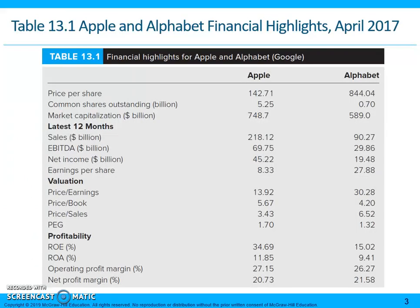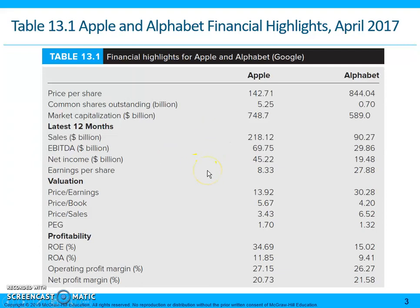Table 13.1 compares Apple and Alphabet, which is Google — two very different firms. Apple's price per share in 2017 was $142 versus $844 for Google. The market capitalization of Apple was $748 billion versus $589 billion for Google. When we compare the financial information, we see a very different story: Apple's sales were $218 billion versus $90 billion for Google — more than double.